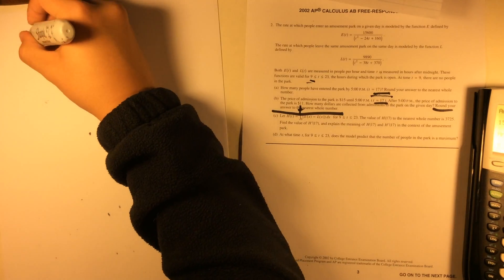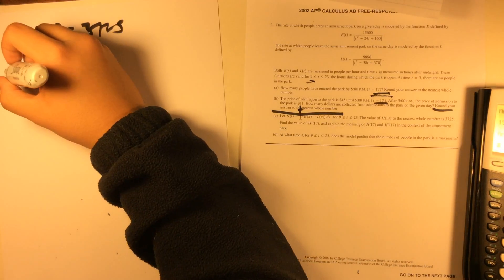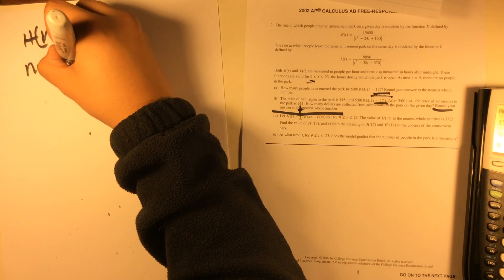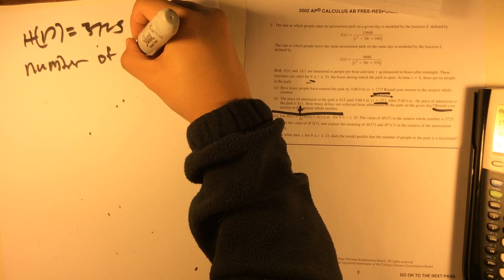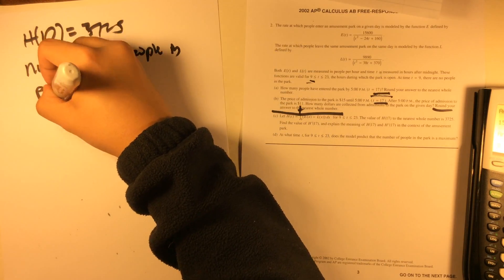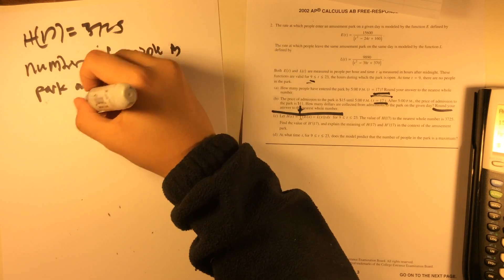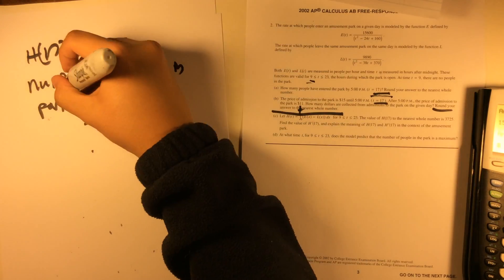H of 17, which equals 3725 from the problem, the meaning of that is the number of people in park at T equals 17. This is very important, you lose this point if you do not reference it.